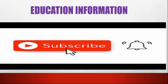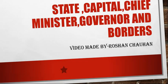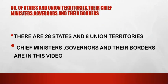Now we start from the state capital, governor and their respective borders. There are 28 states and 8 union territories. Do not be confused about the number of states and union territories. Some students make mistakes in the number of union territories — they say 9 union territories — but the correct answer is 8 union territories. We will discuss later how there are only 8 union territories.